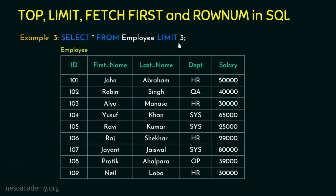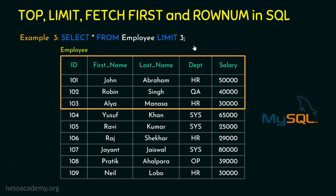Example 3 is the equivalent of Example 1, but while Example 1 is applicable for Microsoft Access and Microsoft SQL Server, Example 3 uses LIMIT, which is accepted by MySQL. So the output is still the first three rows, but if you want similar functionality to TOP in MySQL, you have to use the LIMIT keyword.